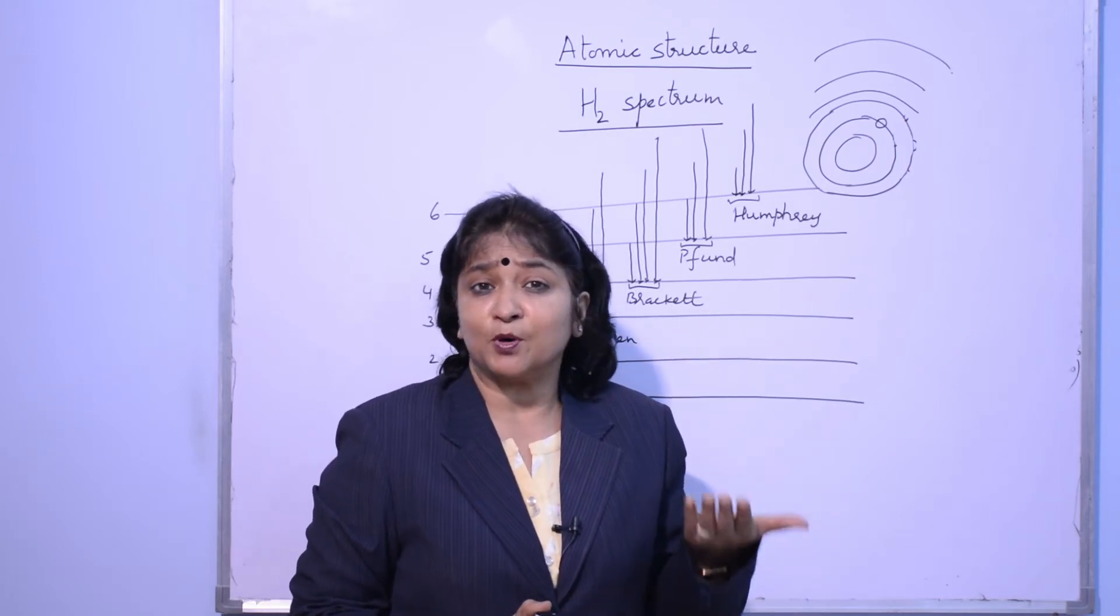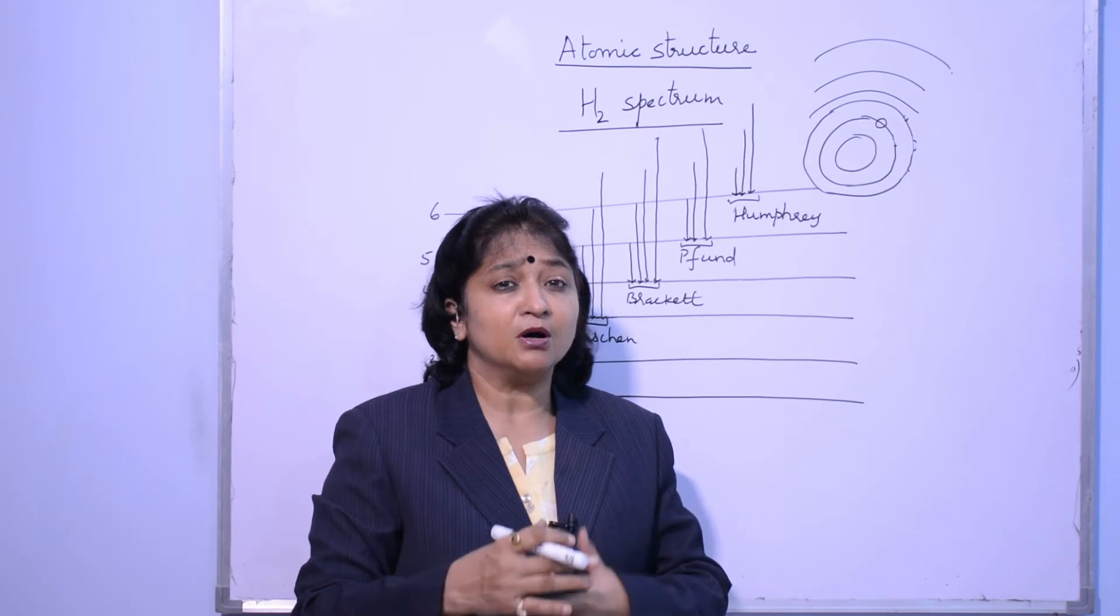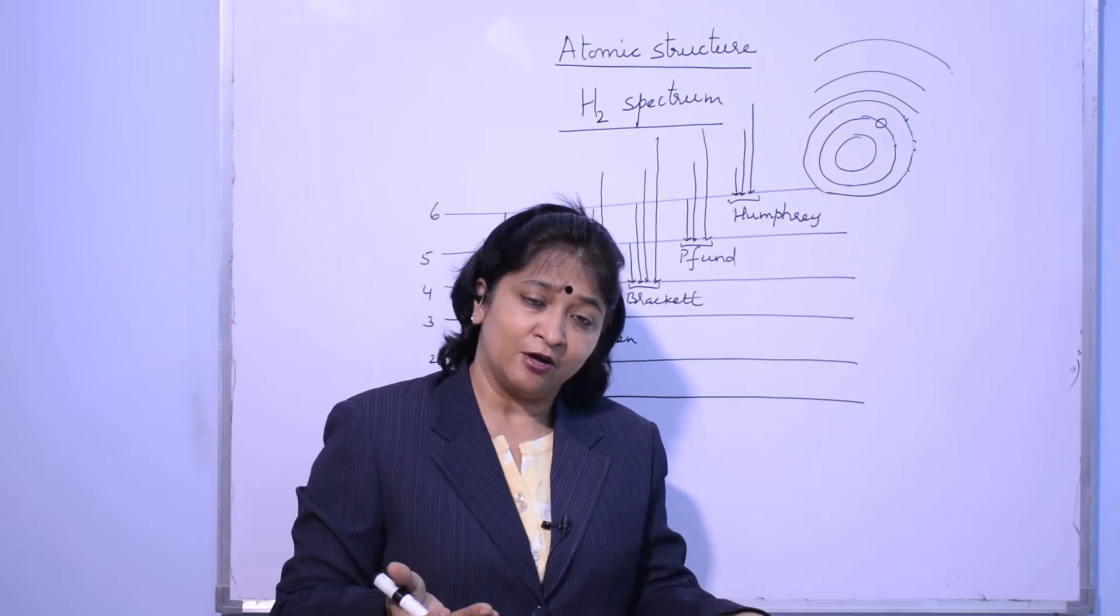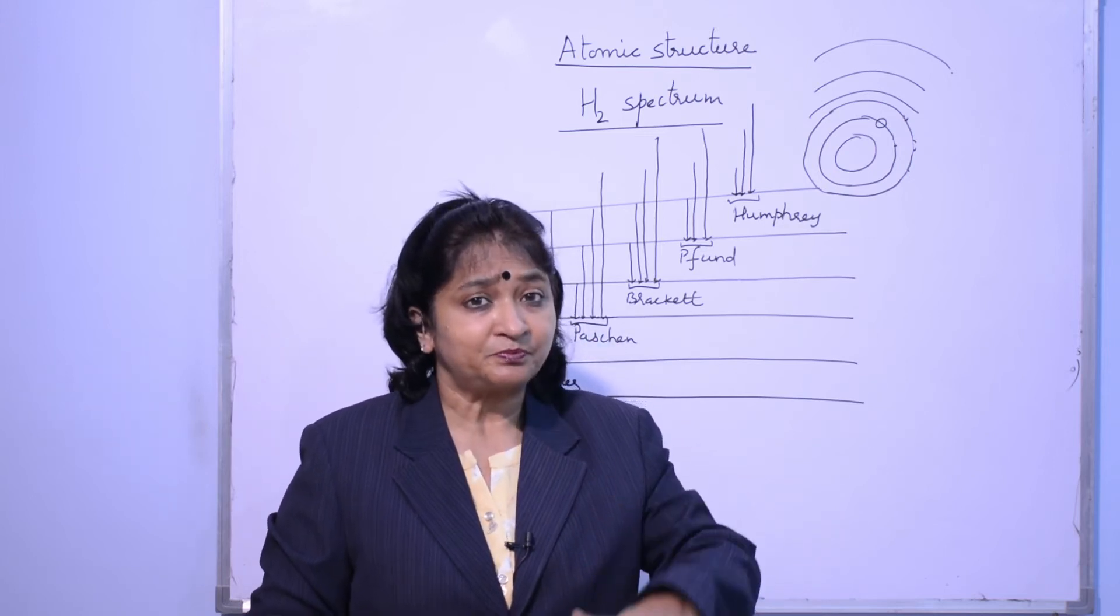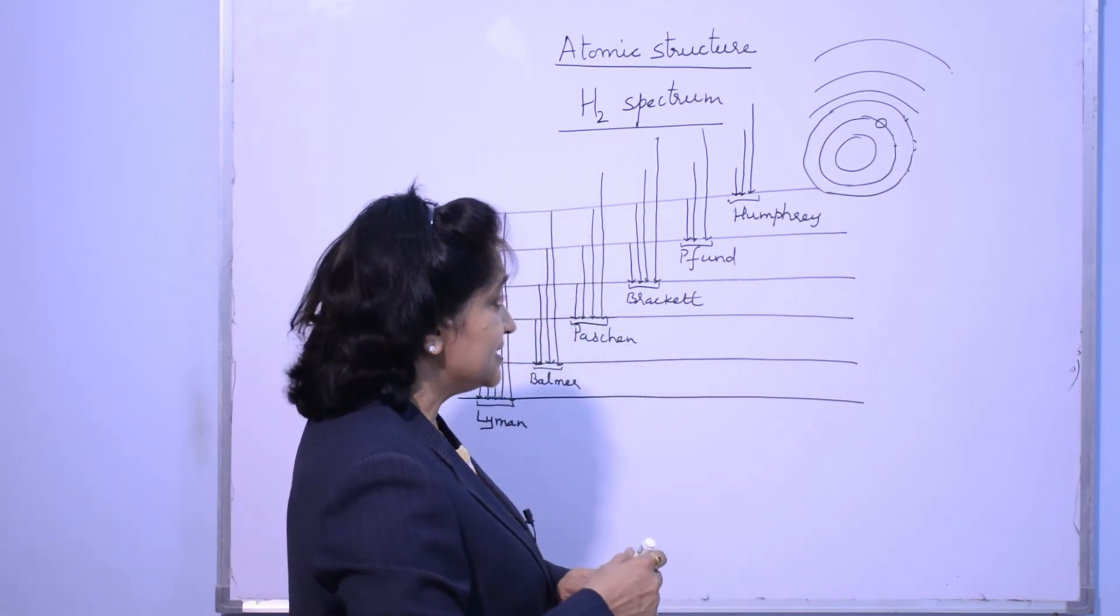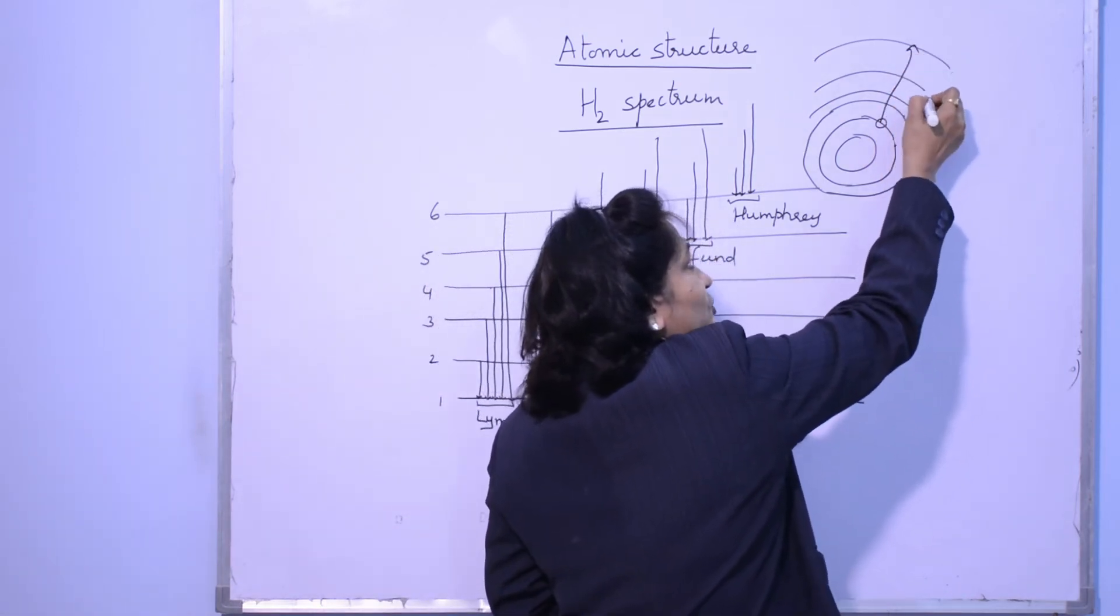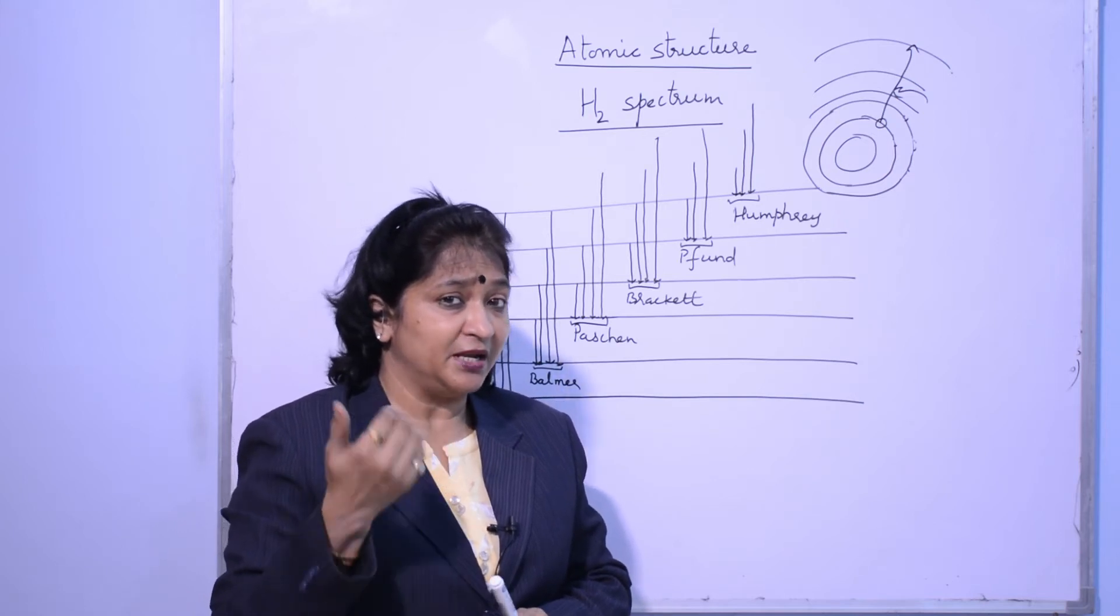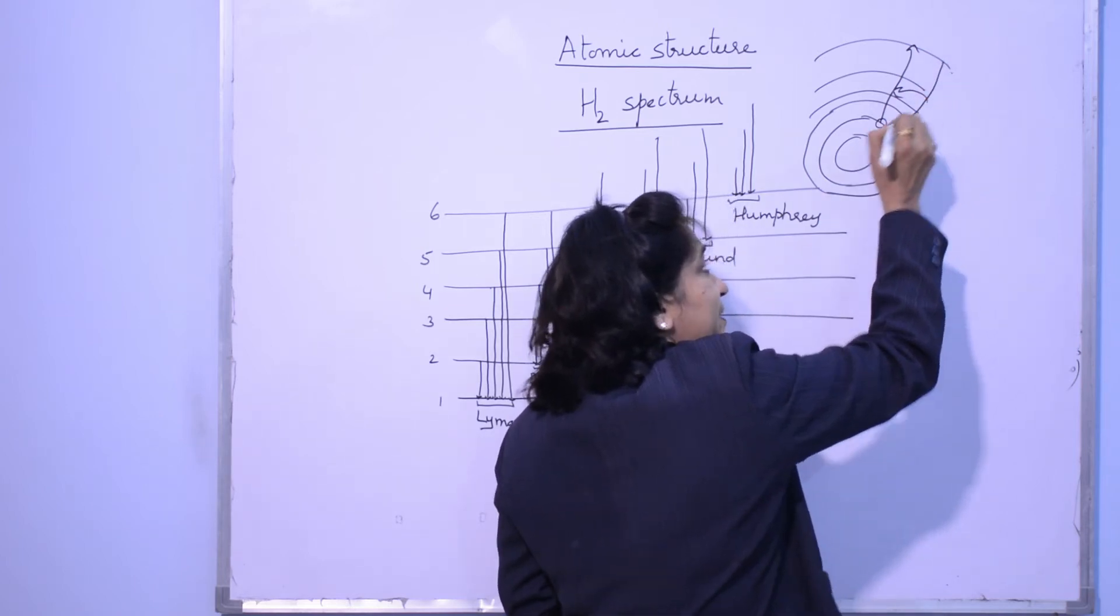So how many interesting things are there! One electron is there in hydrogen and we are getting so many series together. So many series are possible because we didn't take one atom, we took a sample of hydrogen. Sample of hydrogen means there are many atoms in it, means many electrons which are coming to excited state and going to different levels. Ultimately based on their energy, they drop down to ground state, second level, third level.